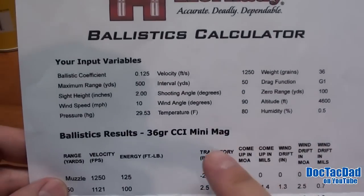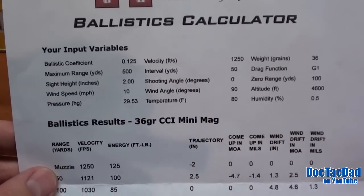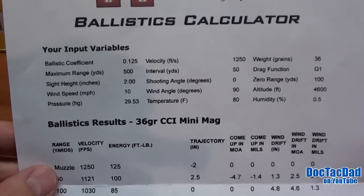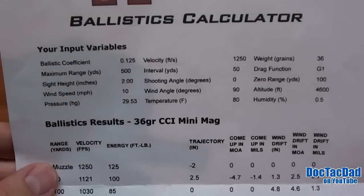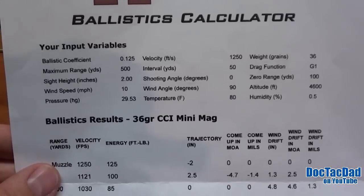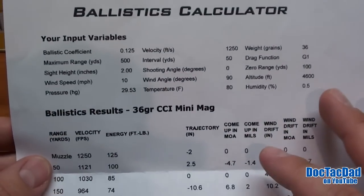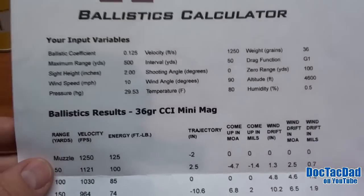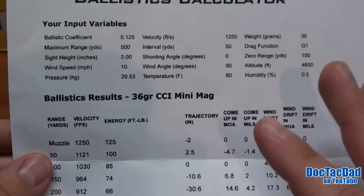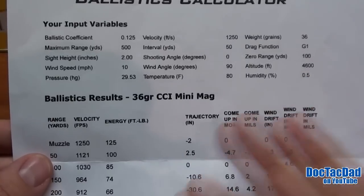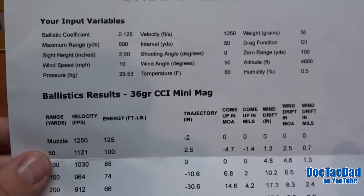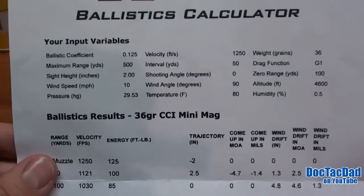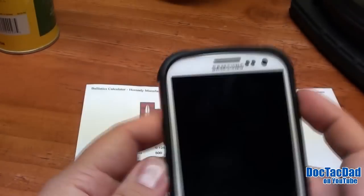This particular chart is worked up for the 36-grain CCI Mini Mag. I'm going to be doing a long-range ballistics test with it here, and this is a little preamble to it. But I wanted to show you how you can do this on your mobile phone as well. Doing it on the computer is simple and straightforward — it is that way on the mobile too — but I wanted to show you how to do it out in the field. So let's go ahead and do that now.